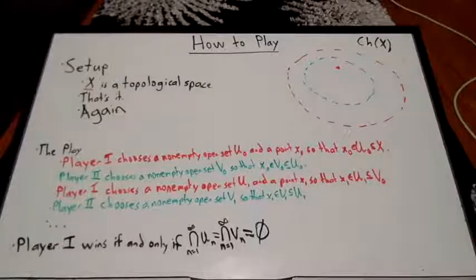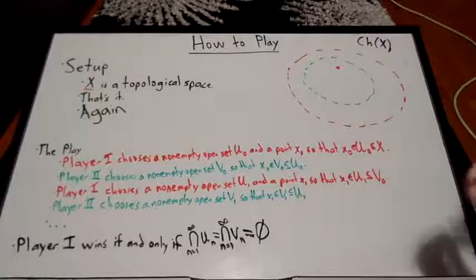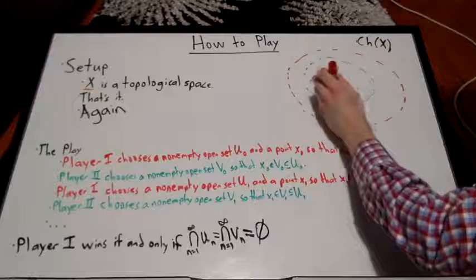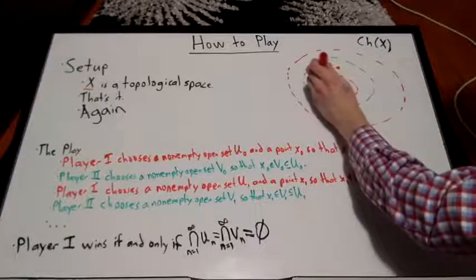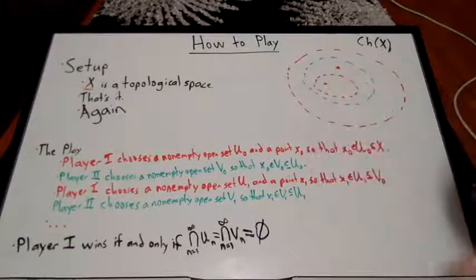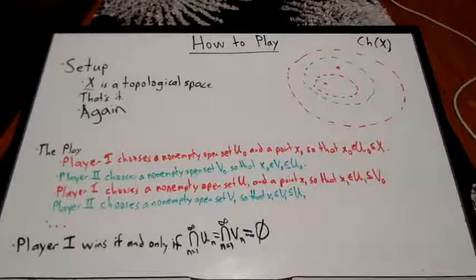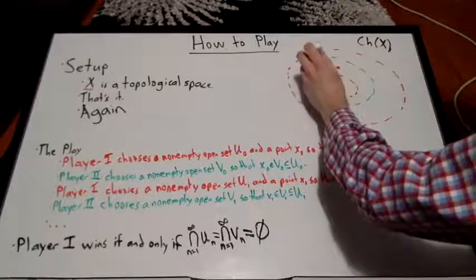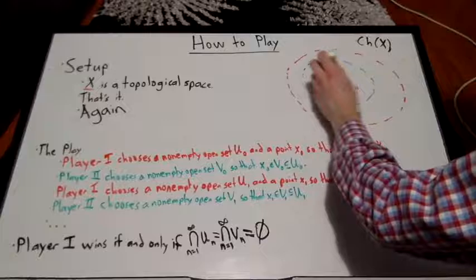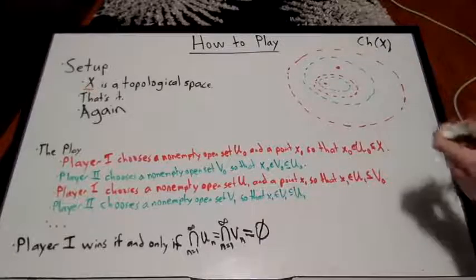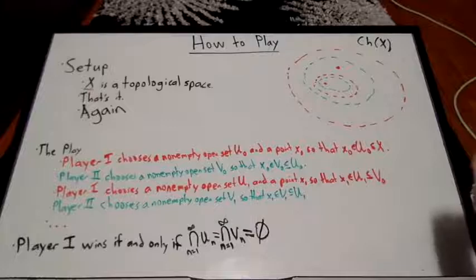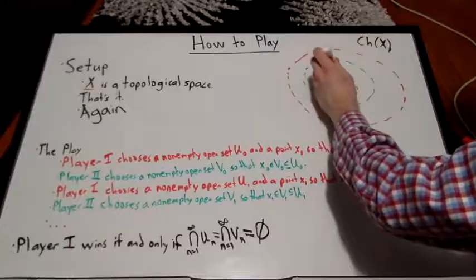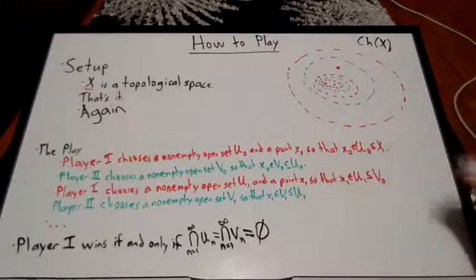So then player 1 goes, and they choose a subset of the set that player 2 chose, and another point in there. Now player 2 chooses a non-empty open set that is a subset of this set. But again, the set has to contain this point that player 1 chose. And then the game continues in this vein, so on and so forth, ad infinitum.